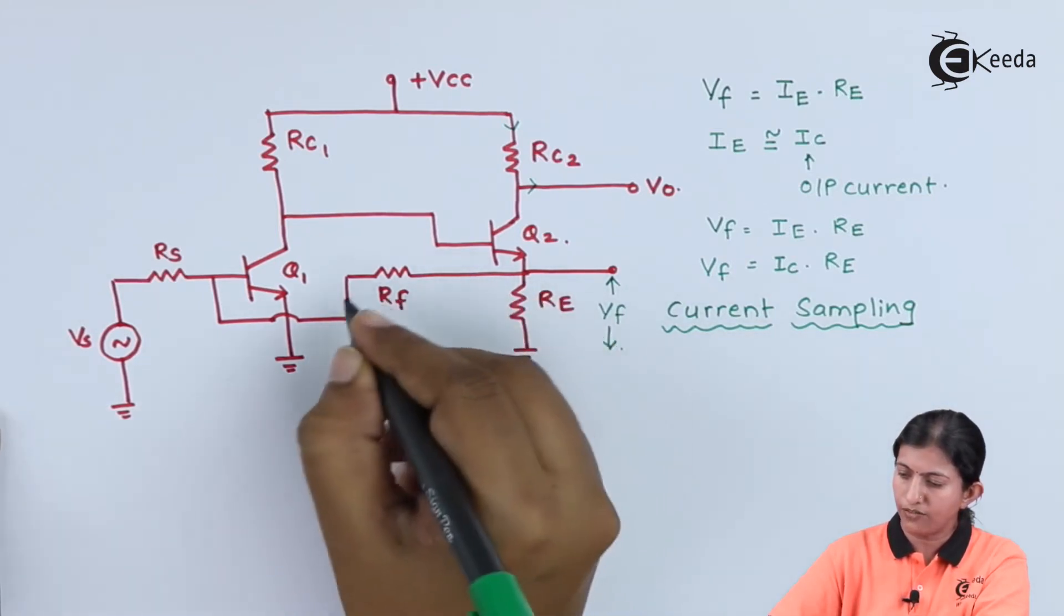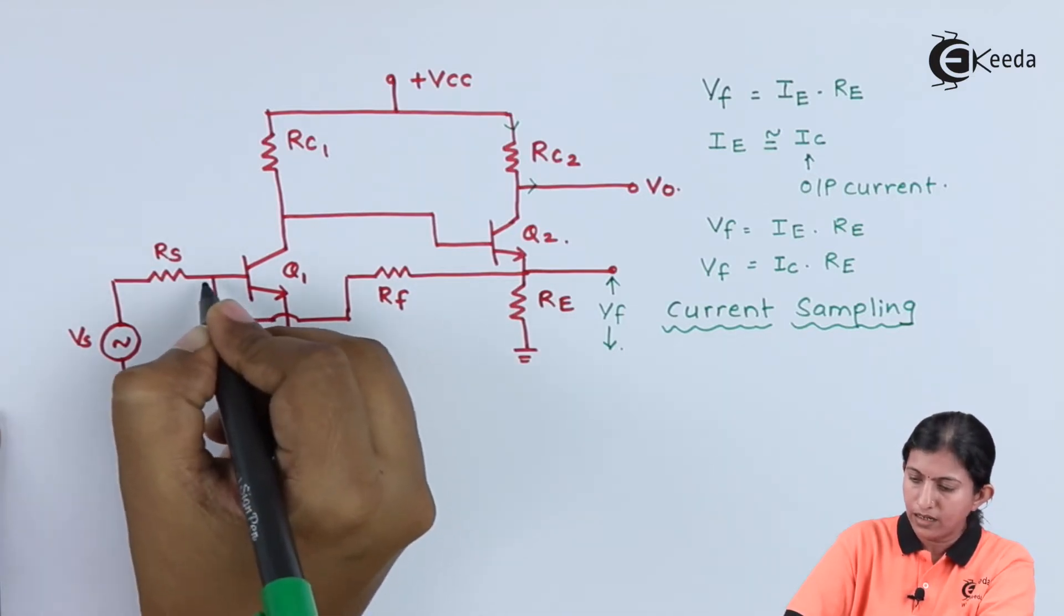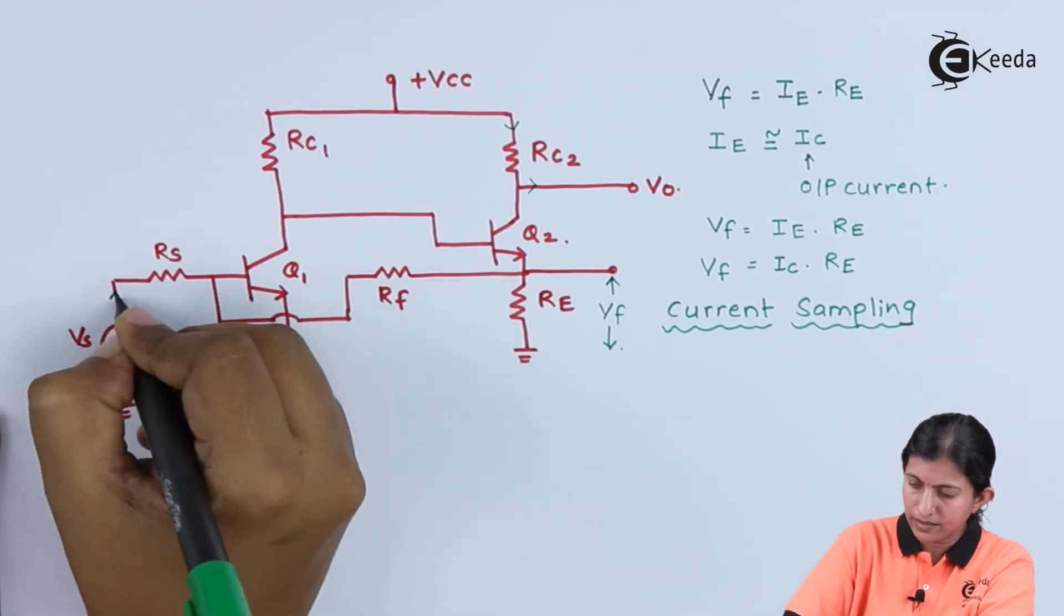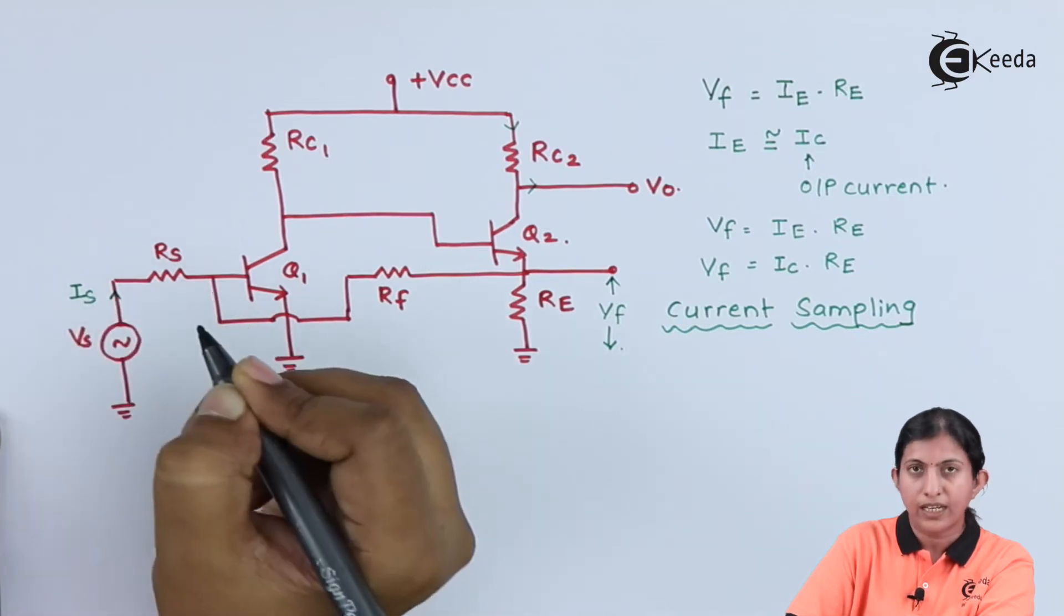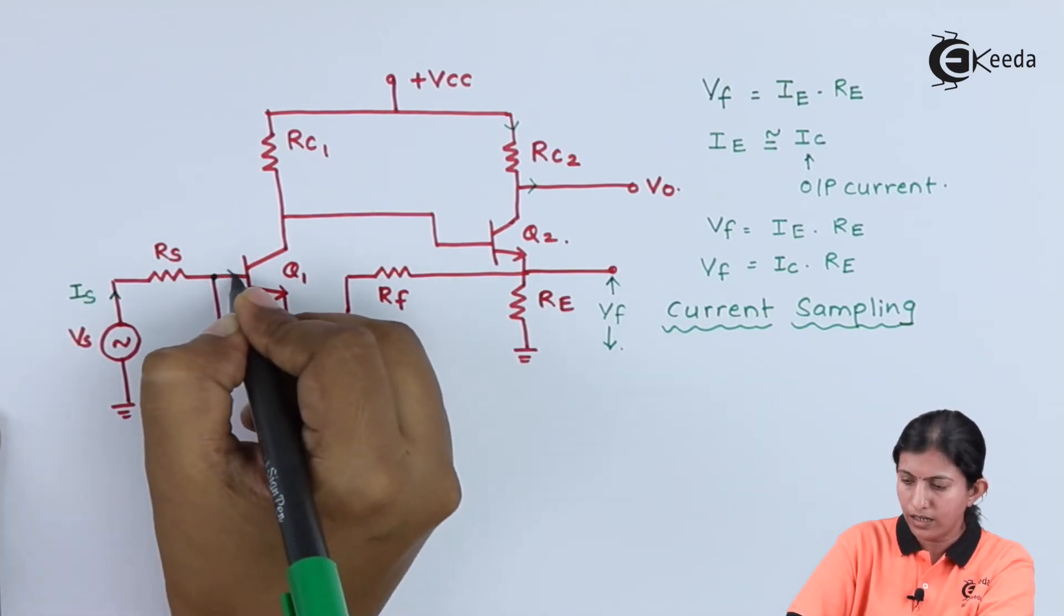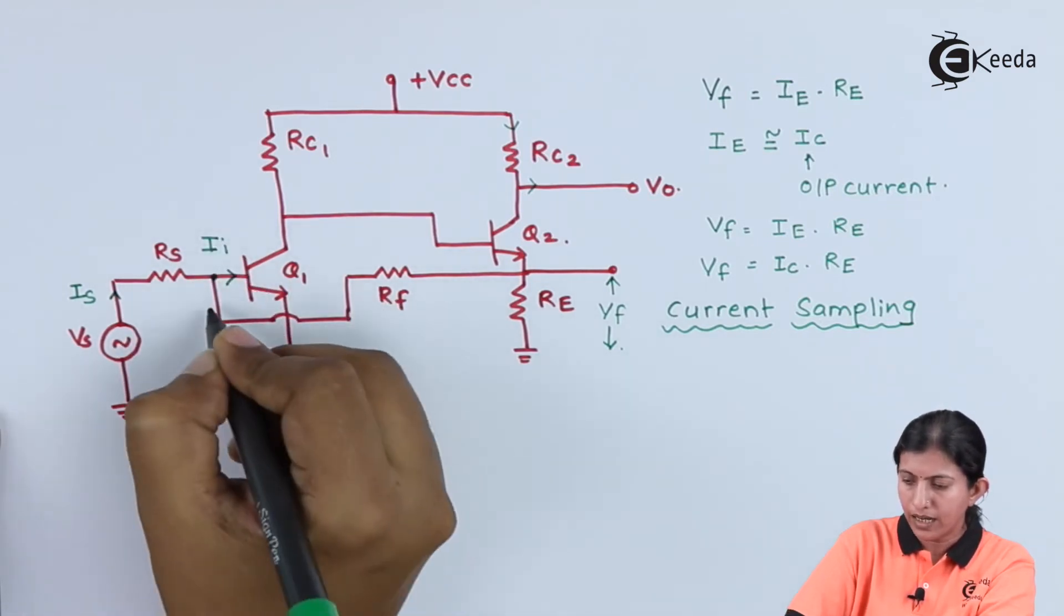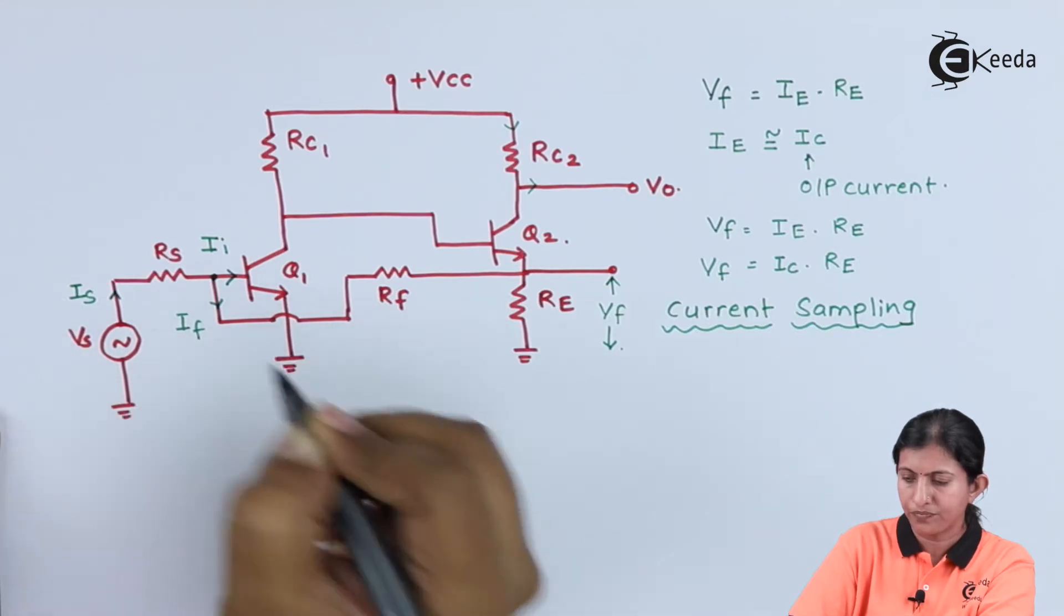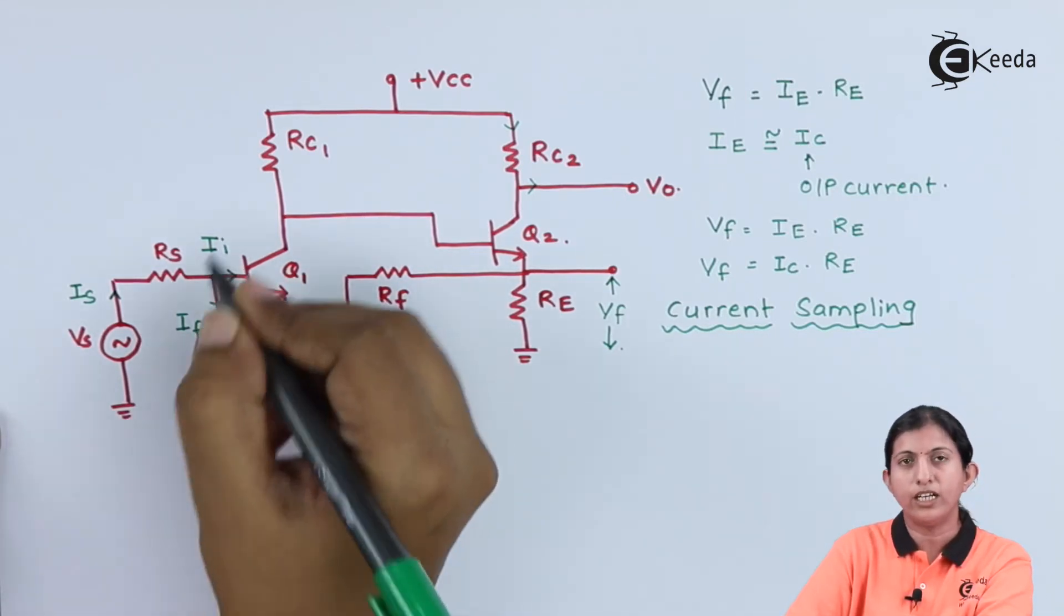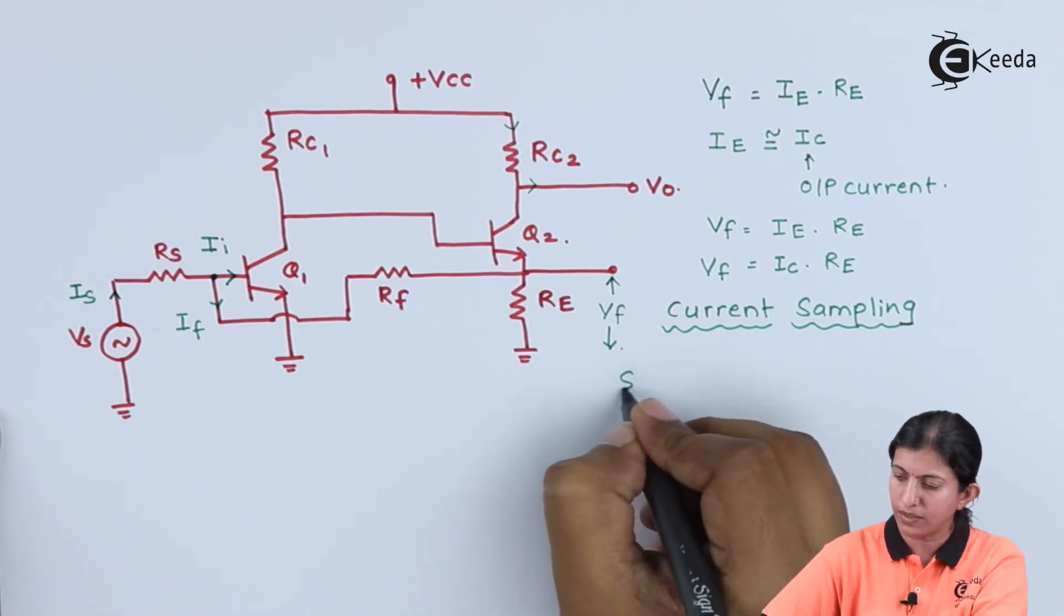From here, we are giving the feedback to the input. The current Is gets divided at this point. The current going to the transistor is Ii and the current going to the feedback is If. As the current splits into two parts, this mixing is shunt mixing.